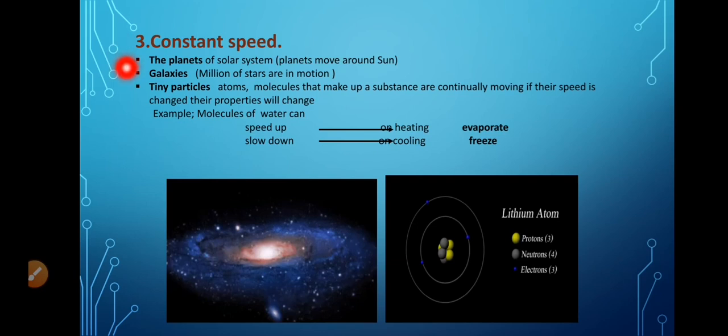A third type is the things that have constant speed. Like the planets of our solar system. Planets move around the sun with constant speed. The galaxies. These galaxies are made up of millions of stars which are in constant motion.